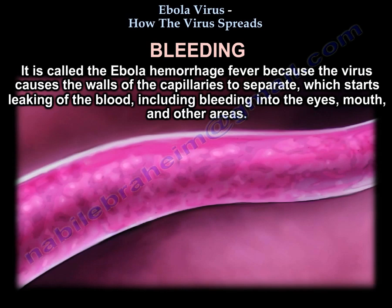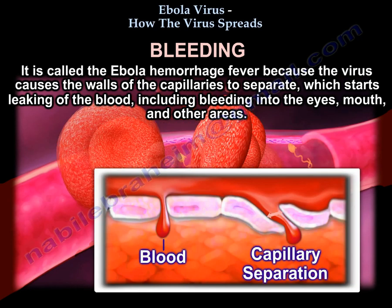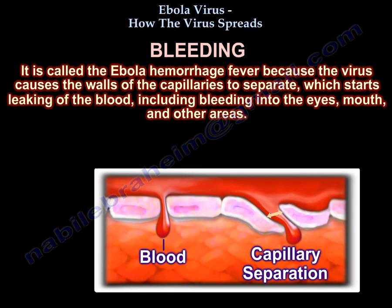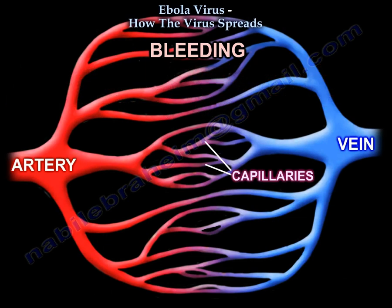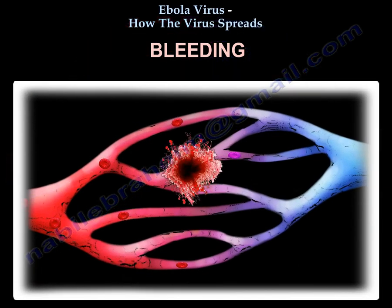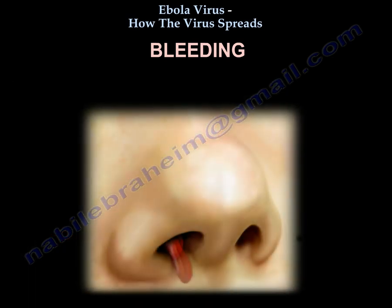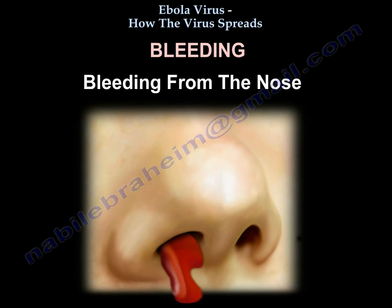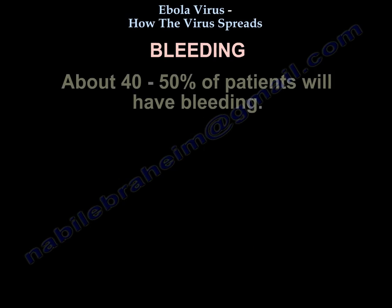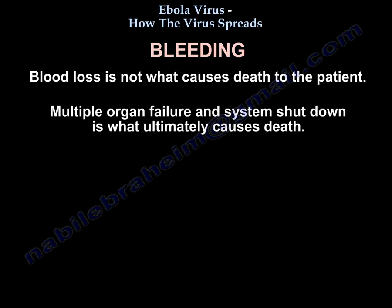It is called Ebola hemorrhagic fever because the virus causes the walls of the capillaries to separate, which starts leakage of blood, including bleeding from the eyes, mouth, and other areas. About 40 to 50 percent of patients will have bleeding. However, blood loss is not what causes death; multiple organ failure and system shutdown is what ultimately causes death.